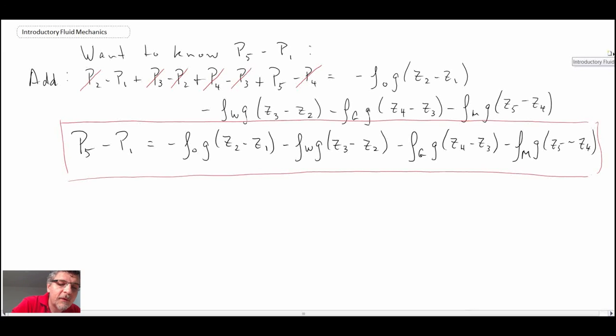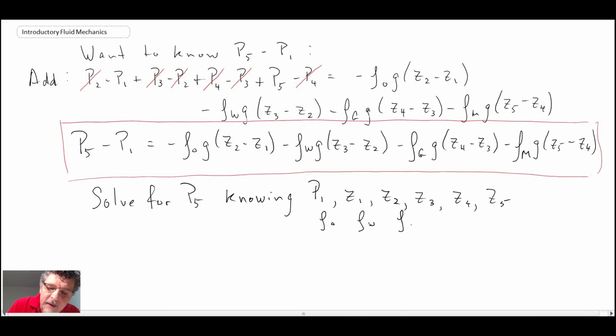In order to solve for P5, you need to know the pressure at the surface P1. And then you need to know all of those interfaces. And the other thing you need to know, you need to know the density of all your fluids within the system. So you need to know the density of oil, the density of water, the density of glycerin, and the density of mercury.